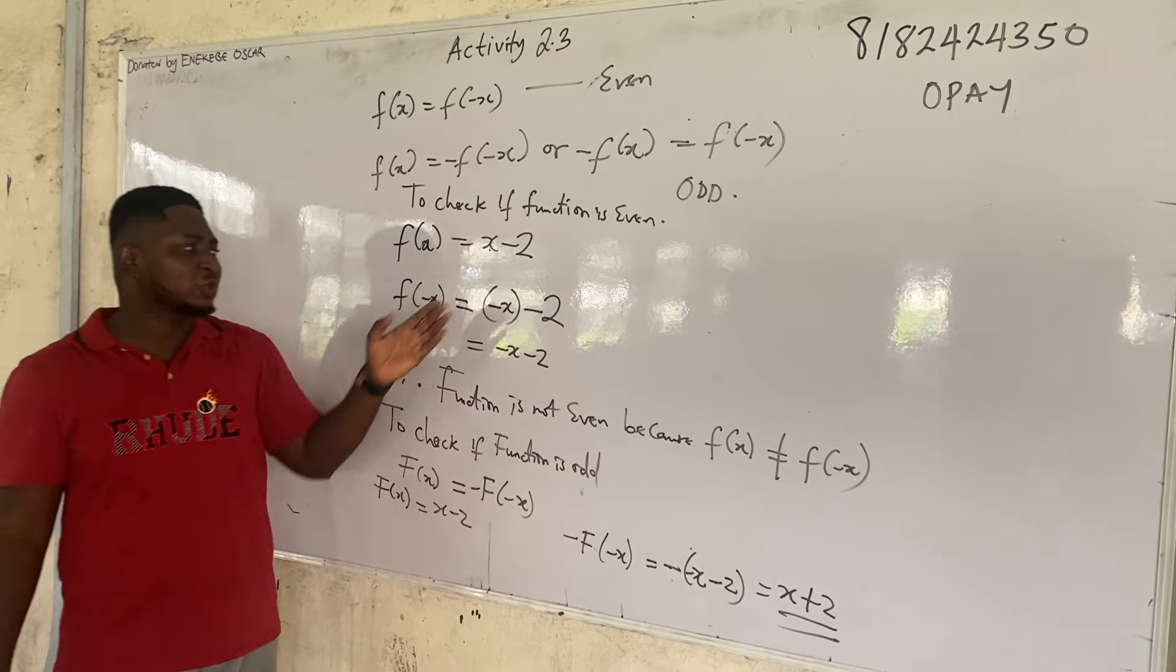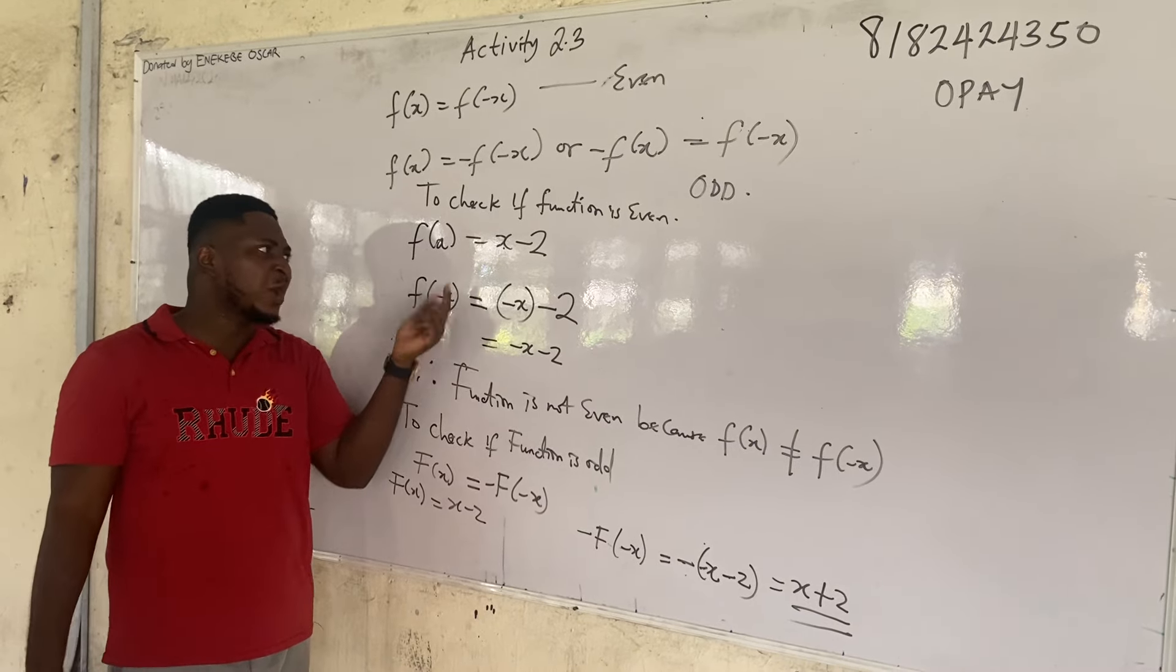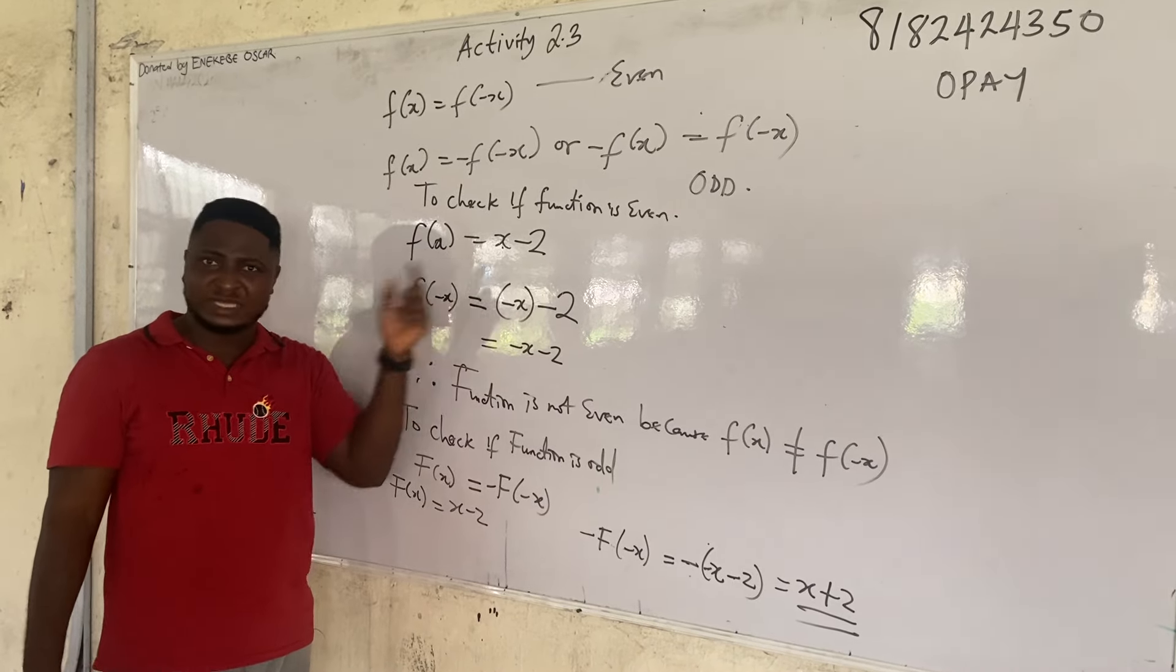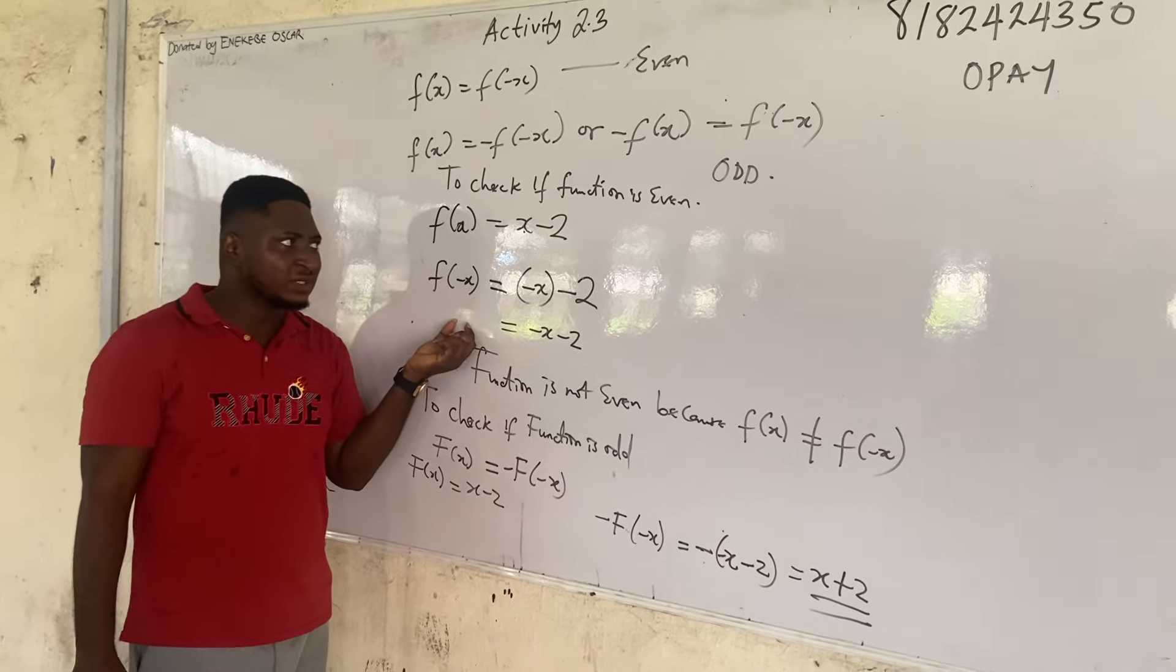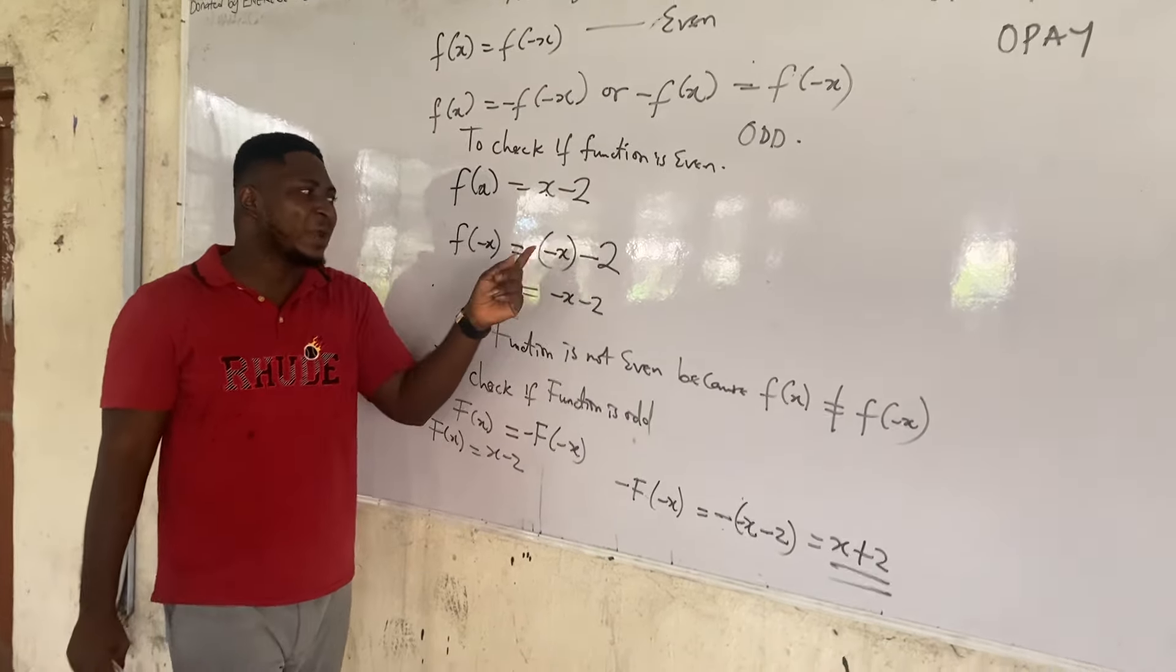So f of x is x minus 2. What is f of minus x? f of minus x means anywhere we see x in the function, we replace with minus x. So instead of f of x minus 2, we have minus x.